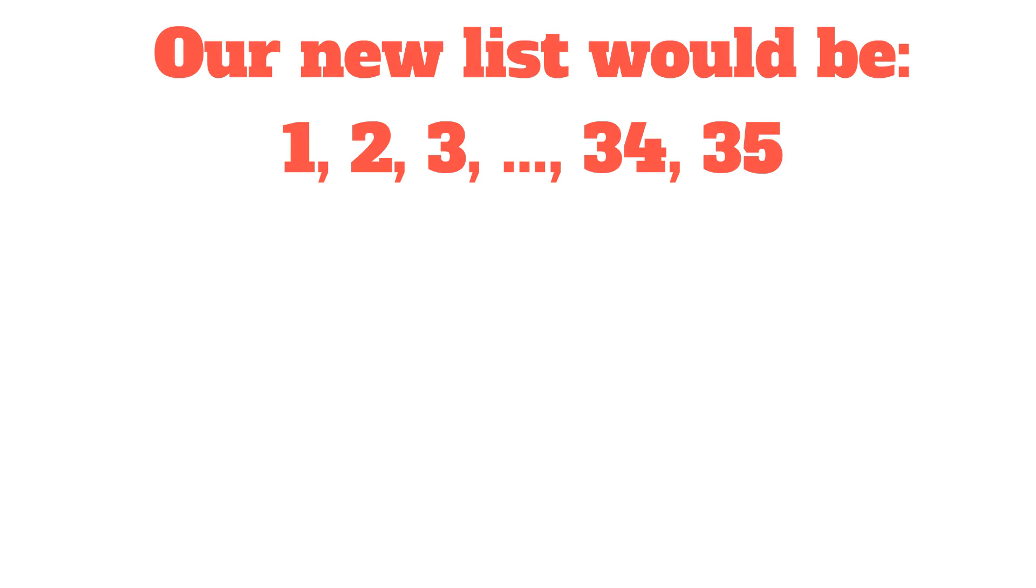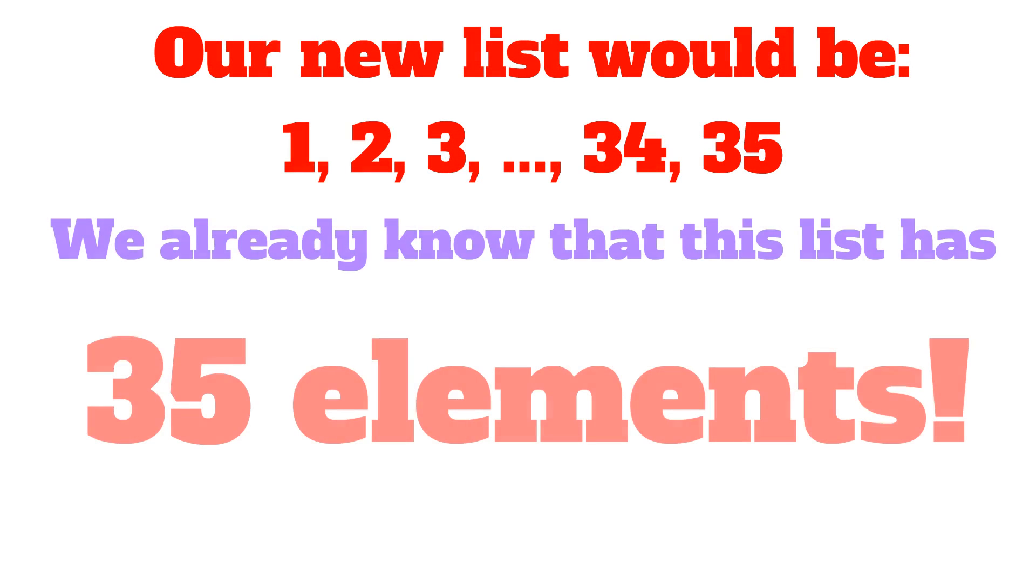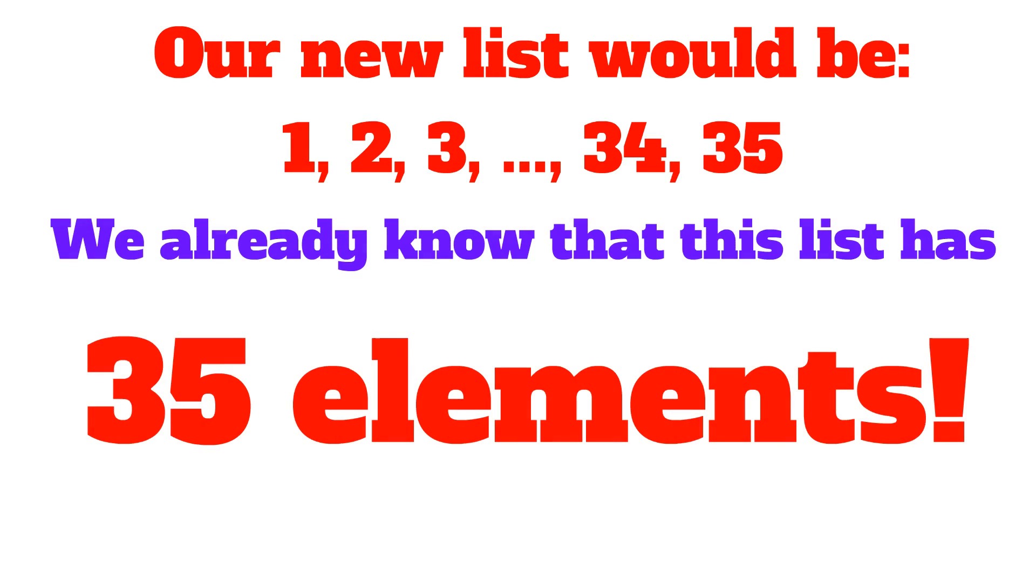Our new list would then be 1, 2, 3, all the way to 34, and 35. We already know that this list has exactly 35 elements from our earlier example.